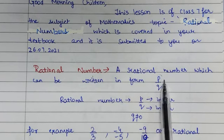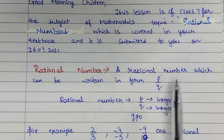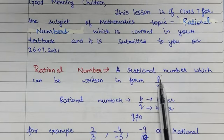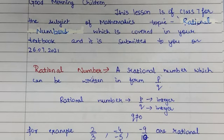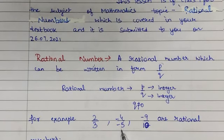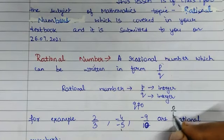Where P is an integer and Q is also an integer. But there is one condition: Q cannot be 0. P can be 0, but Q cannot be 0. For example, 2 by 3, minus 4 upon minus 5 — because integers can be negative also — minus 9 upon 10, or you can also write 0 upon 1.